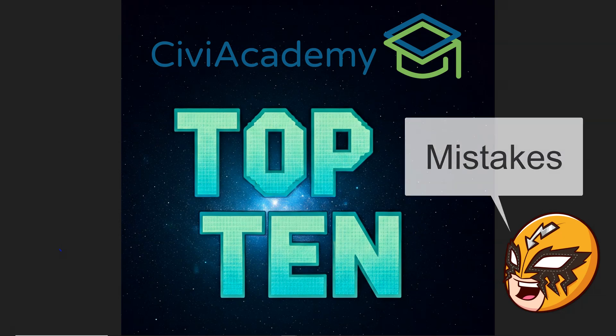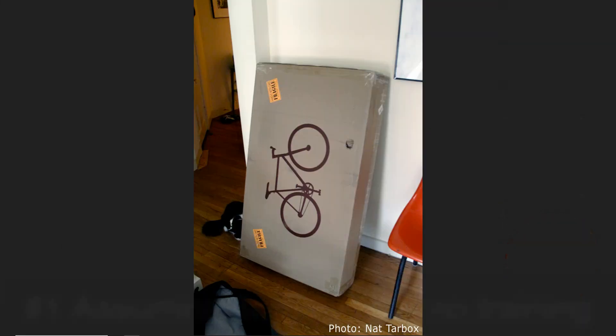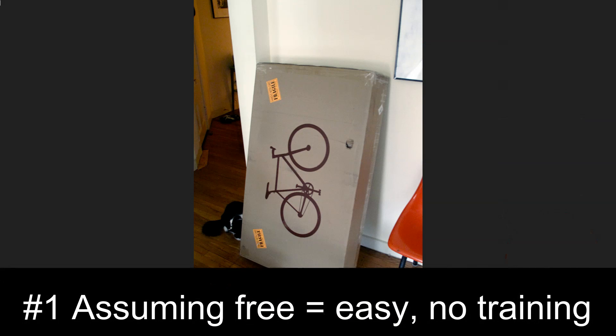Number 10: assuming that because CiviCRM is free, it is easy and simple and requires no training. It's free as in kittens — there's actually a cat in this photo, and there's also a bike in a box. You wouldn't adopt a cat without asking some questions, and you wouldn't assemble a bike without reading the instructions, having some prior experience, asking for help, or outsourcing it. But for some reason, when it comes to Civi, because it's free, they just assume it's point and click.